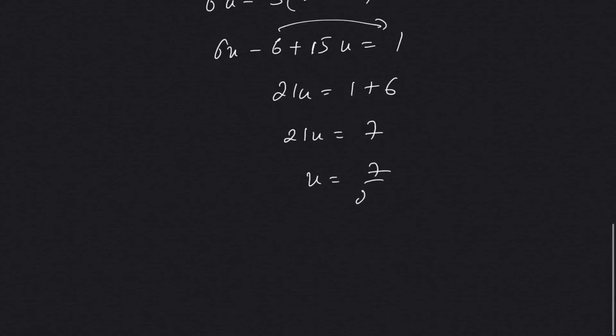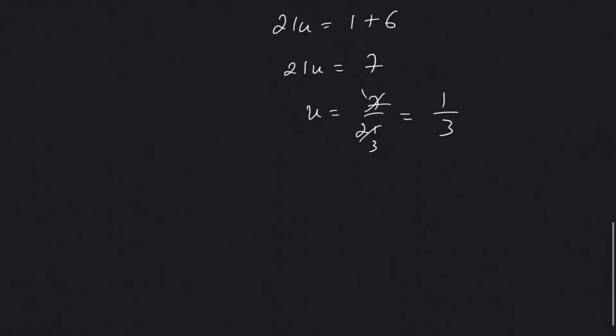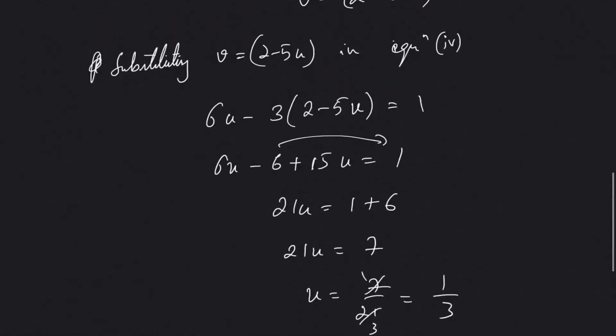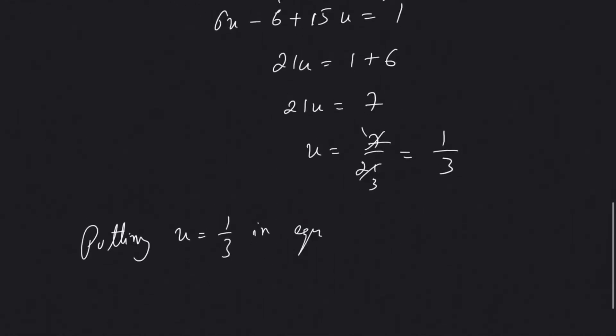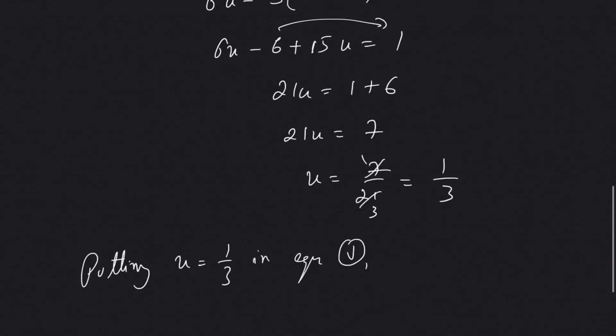Then 21u plus 6 minus 6. So 21u equal to 1 plus 6 is 7. u equal to 7 by 21, which is 1 by 3. Now putting u equal to 1 by 3 in equation 5.